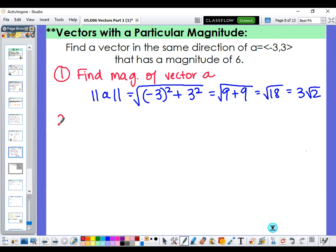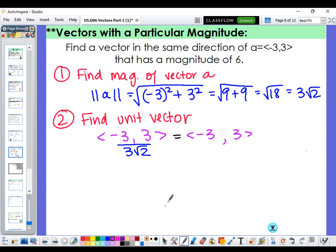Next step would be to find the unit vector. And we did that by taking the original vector and dividing it by its magnitude. So our original vector, <-3, 3>, we're going to divide now by this new magnitude. And then we would need to break this apart into two separate components, dividing both the x and the y's.